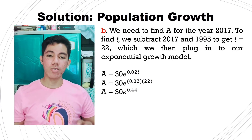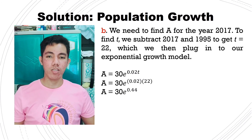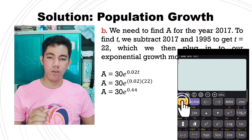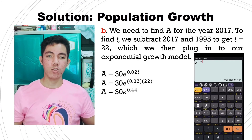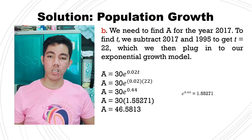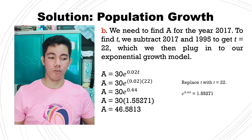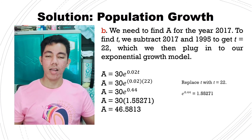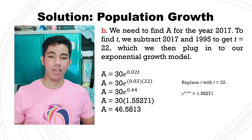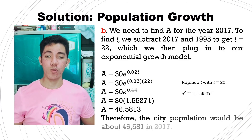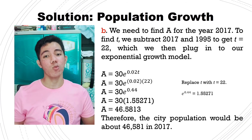So A equals to 30 times e raised to 0.44. To find the value of e raised to 0.44, press Shift, e, then raised to 0.44 on the calculator, and that is equivalent to 1.55271. So now let's multiply 30 times 1.55271, which is equivalent to 46.5813. Since the population is in thousands, therefore the city population would be about 46,581 in 2017.